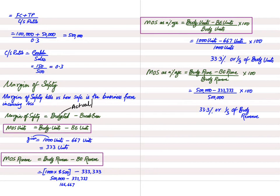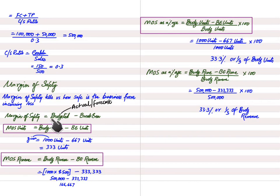Sometimes the examiner asks to calculate margin of safety based on actual or forecast figures instead of budget — the formula remains the same, just replace 'budgeted' with 'actual' or 'forecast.' If the examiner doesn't specify, always use budget. I hope you understood the basic concepts behind break-even analysis, which is part of marginal costing. Please share this video with other students and do subscribe to the channel.